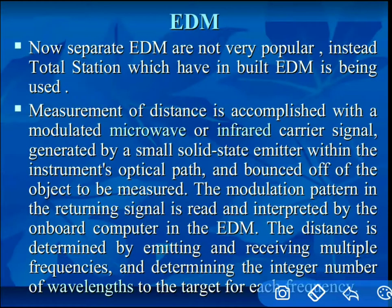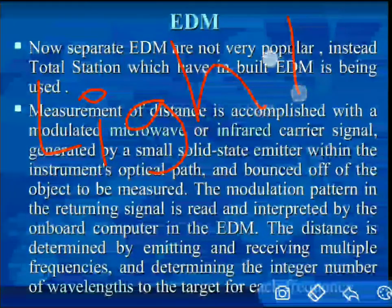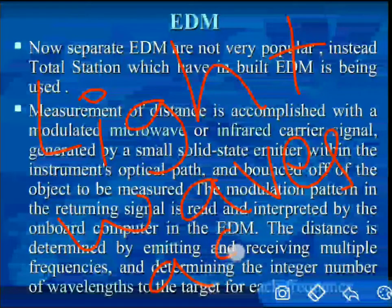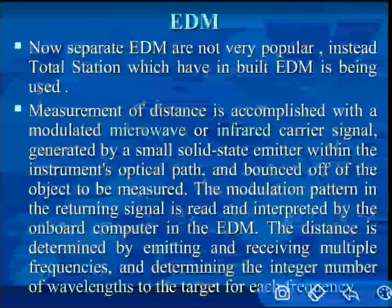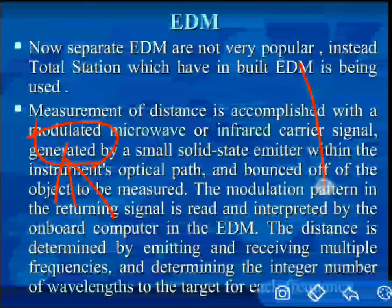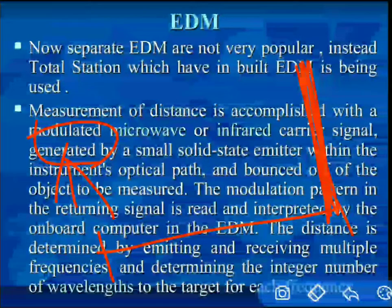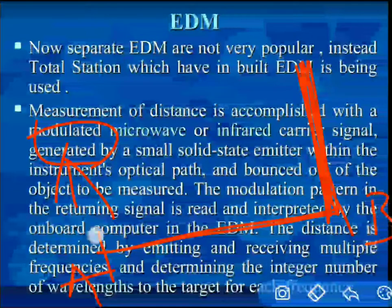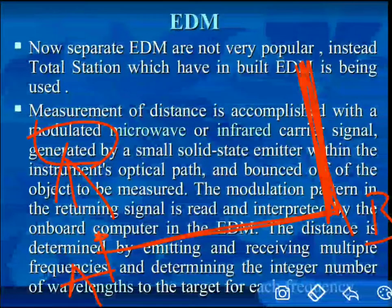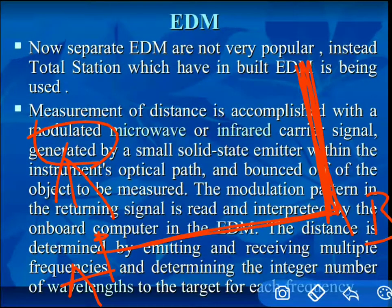How does it work? Previously we were using light waves as a target. For example, we place our instrument at a point, and somewhere there is an object. If we want to find the distance, we need a prism rod. To find the distance from point A to point B, we place our instrument and target object B with the help of a prism rod.